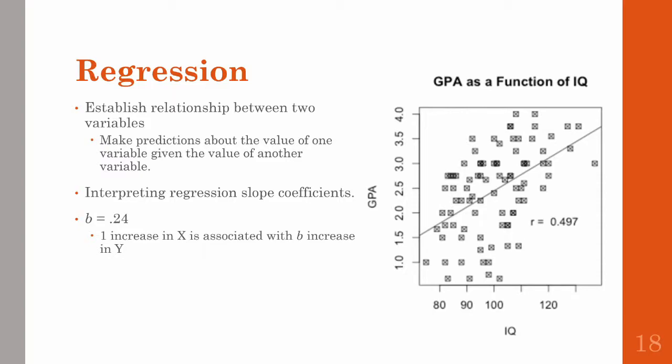The variable being predicted is the outcome or criterion variable. Knowing there's a relationship between IQ and GPA, for example, you can take a new person who hasn't been previously measured, use their IQ score, and predict what their GPA would be. While we can make predictions using regression, we still need to be careful not to make any causal claims.